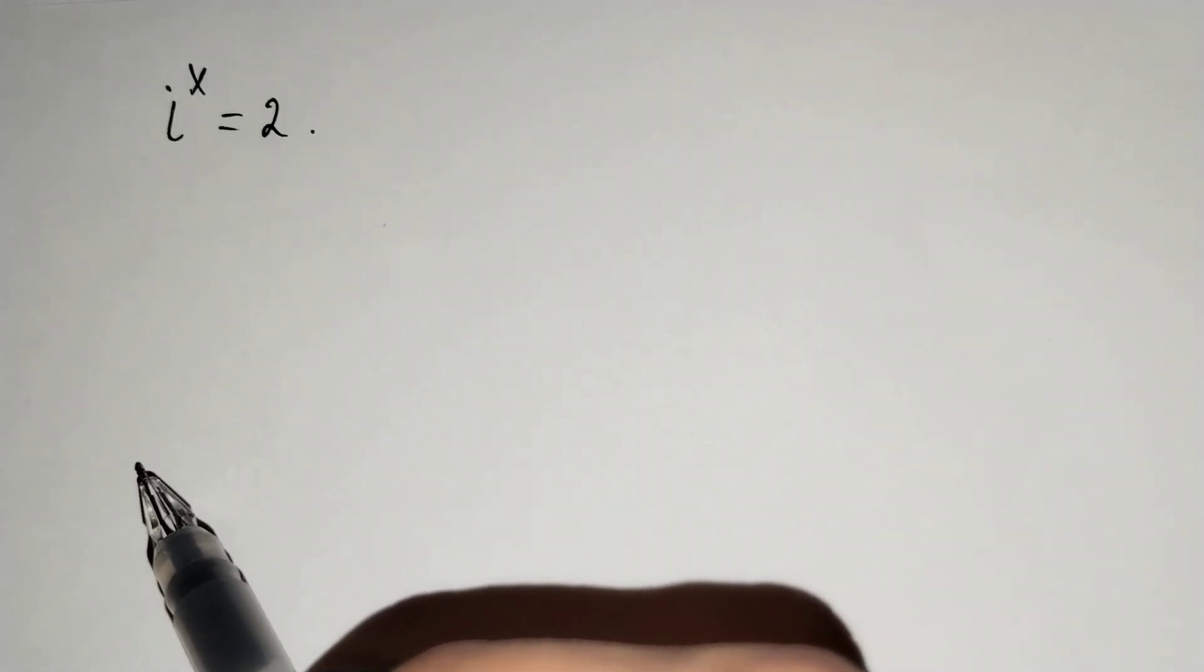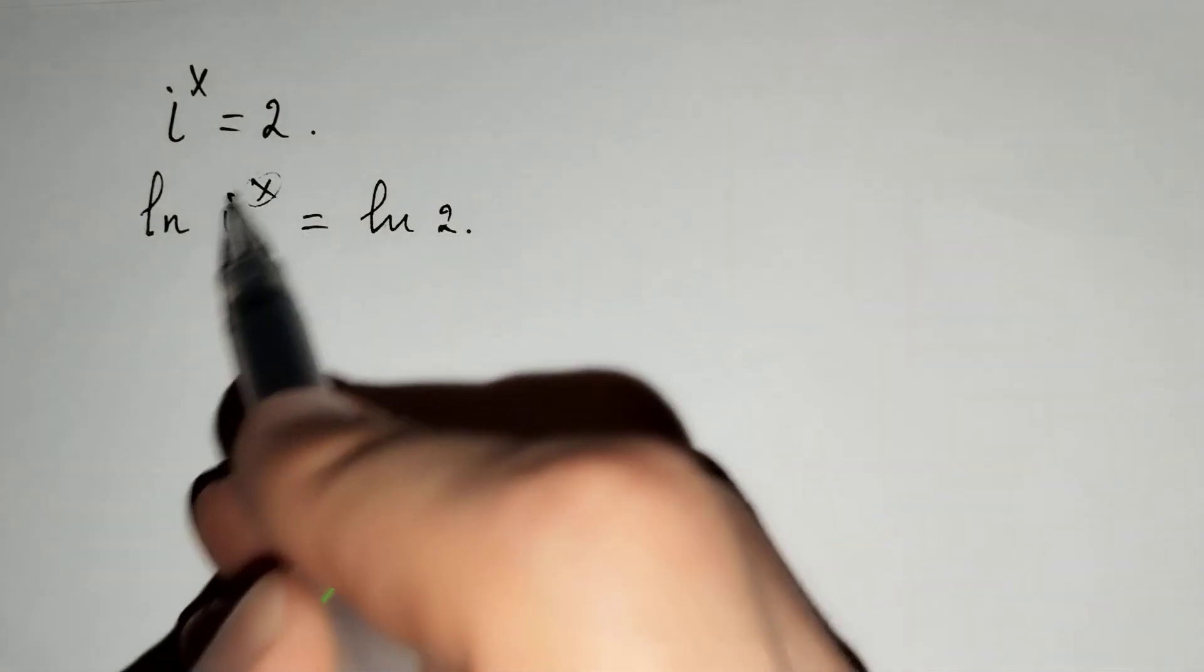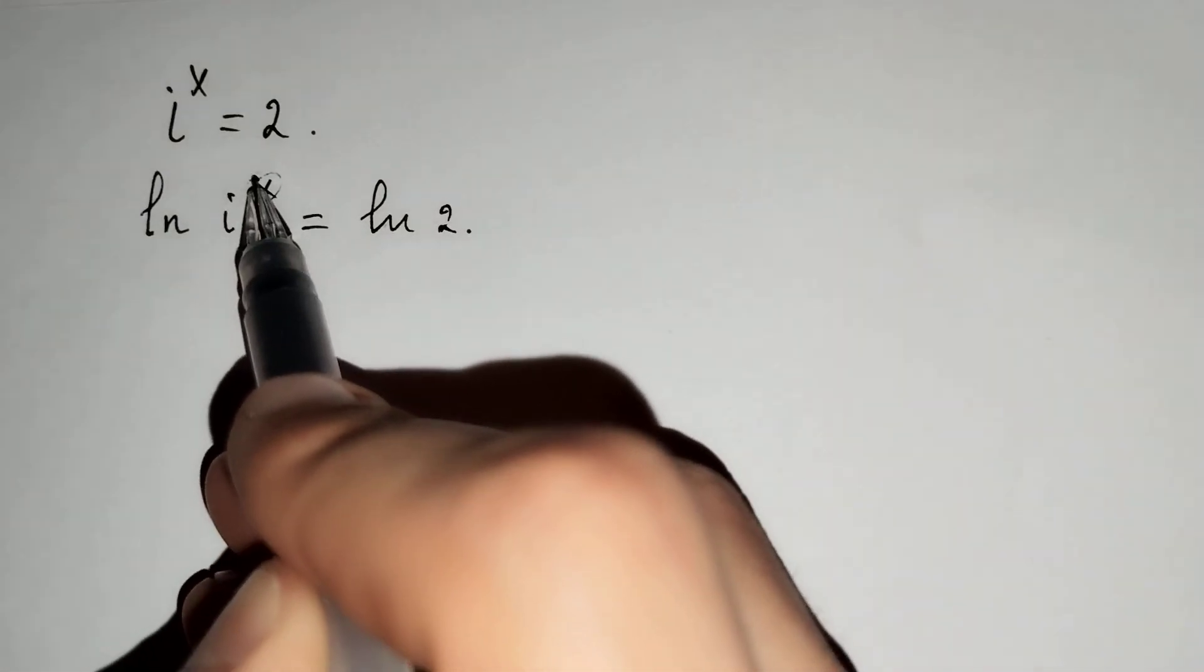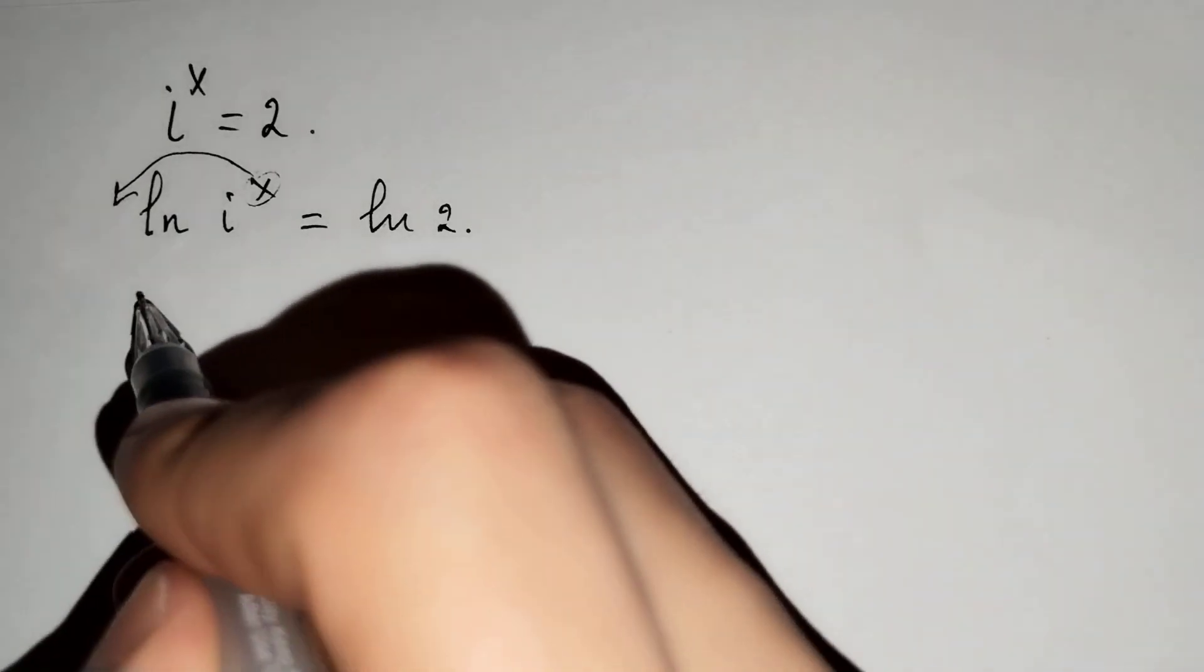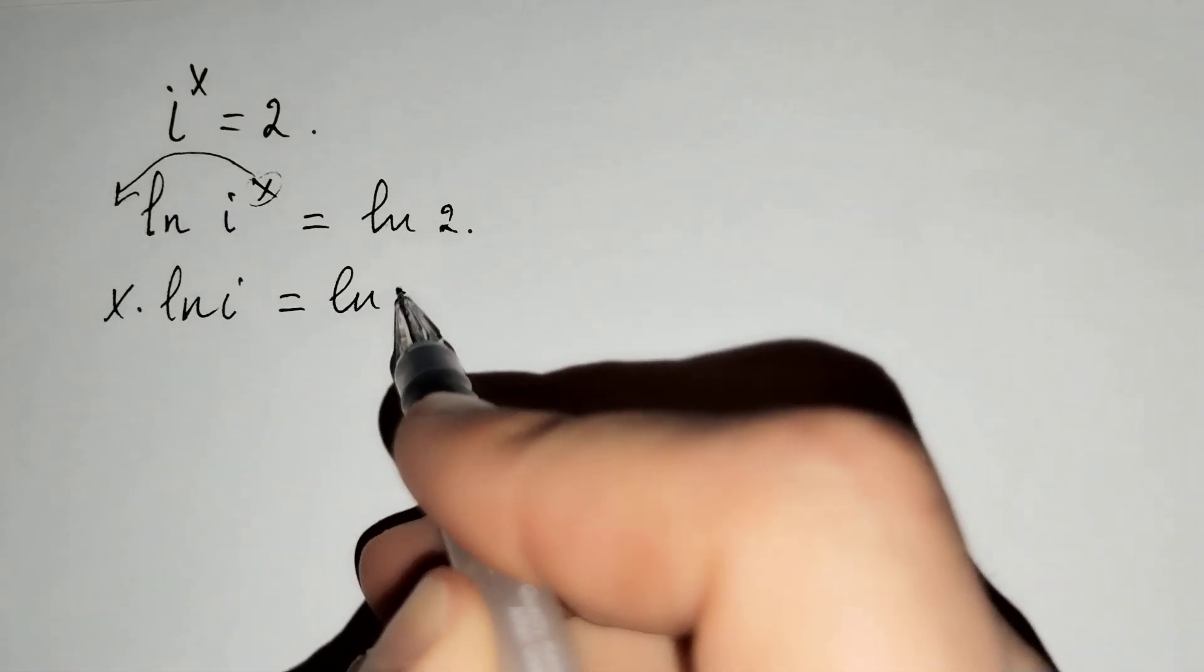Firstly, if we apply ln to both sides, ln i power x equals ln 2. And you can see that x is the power, and that's why x comes here: x times ln i equals ln 2.